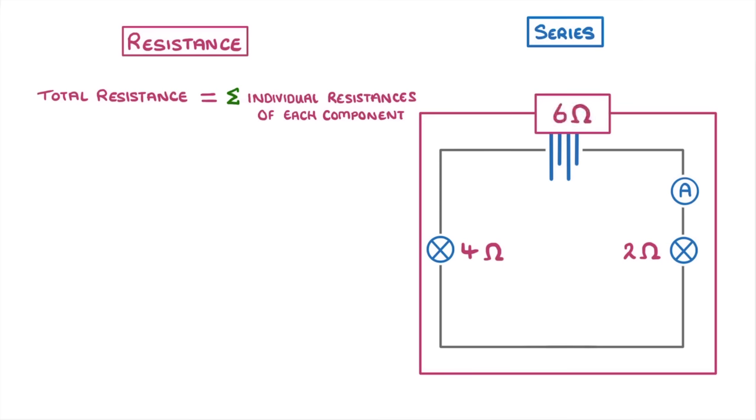Now that we know the total resistance of our circuit, we can use Ohm's law to calculate the current, by taking the potential difference of our battery, so 12 volts, and dividing it by our total resistance of 6 ohms, to give us a current of 2 amps.